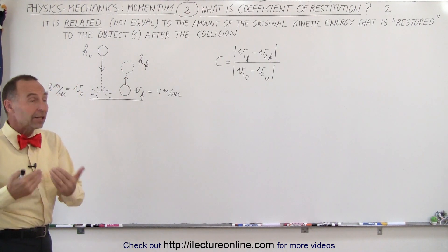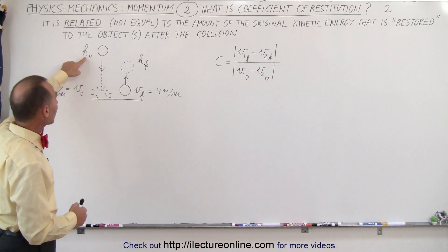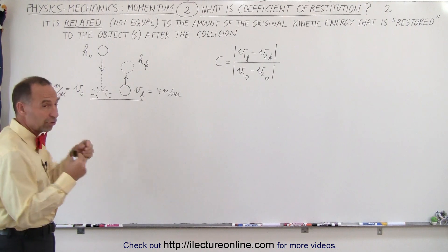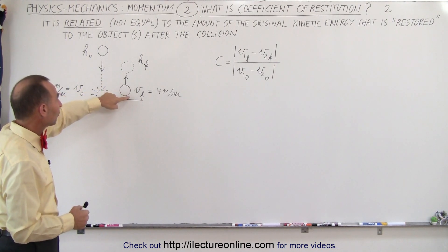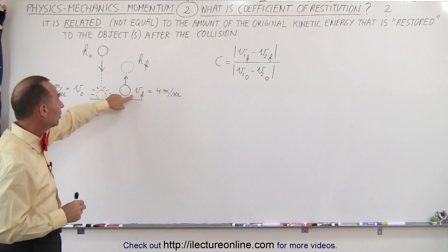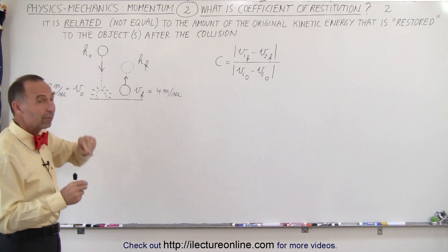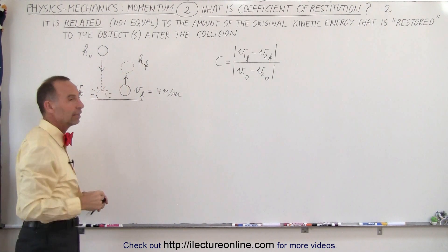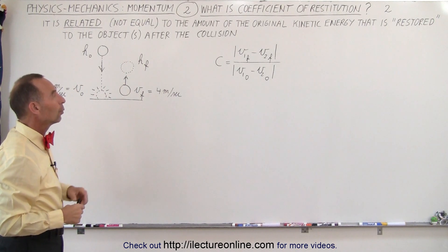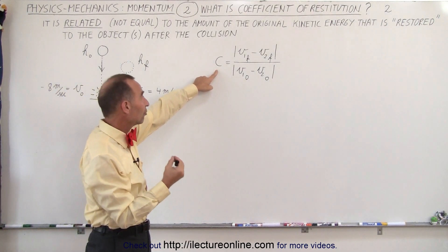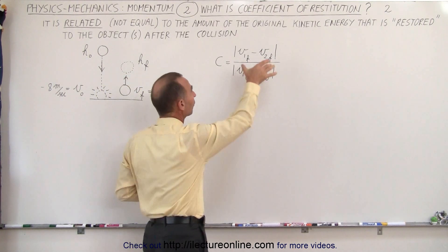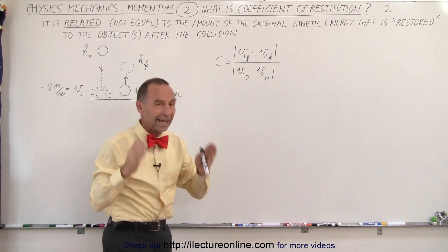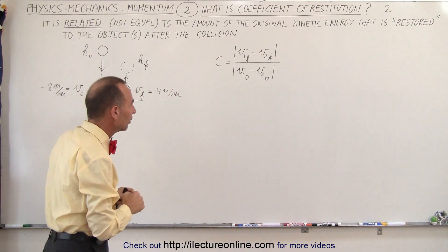We have a similar situation as in the previous video where we drop a ball from some initial height h sub nought. It reaches the floor with some initial velocity before the collision, then bounces off the floor with a velocity after the collision, and then reaches a certain height. If some energy is lost during the collision, it will not reach the same initial height. The coefficient of restitution is equal to the ratio of the differences in velocities after the collision divided by the differences in velocities before the collision, and we do take the absolute value of those differences.